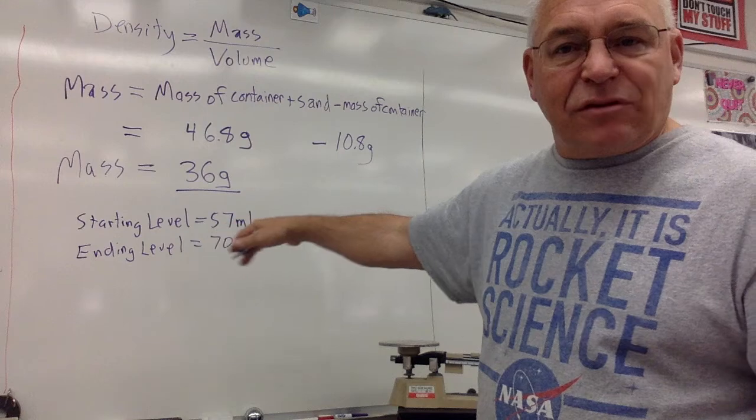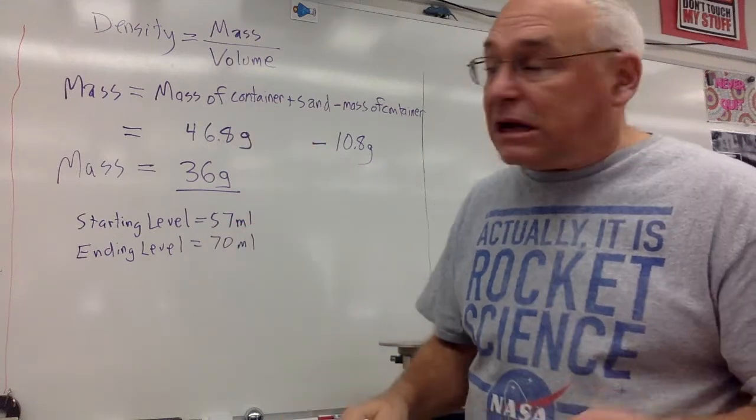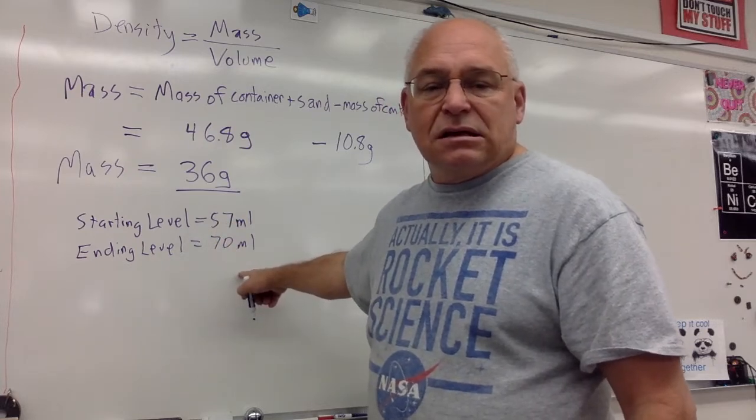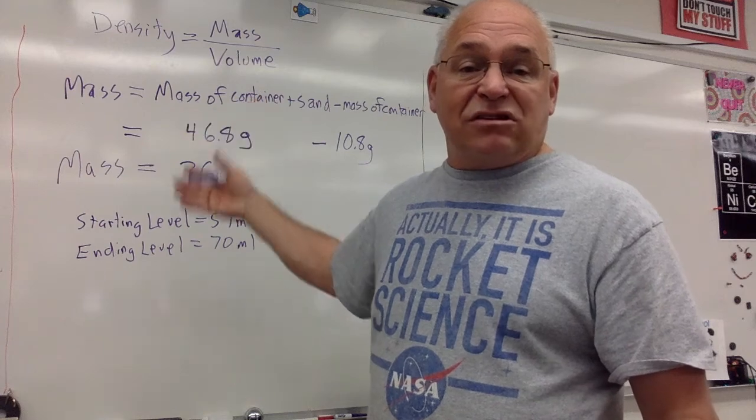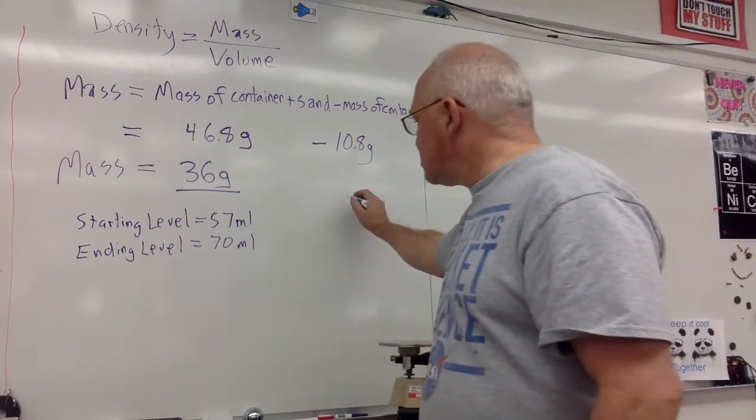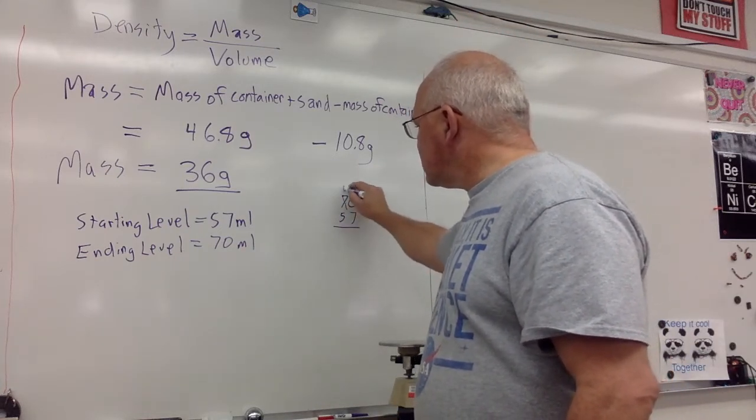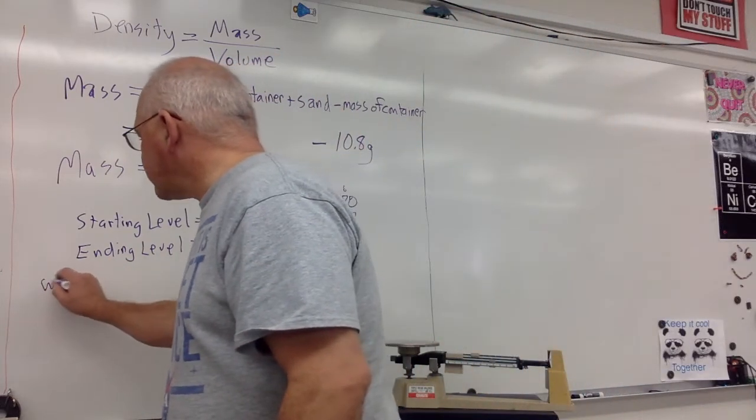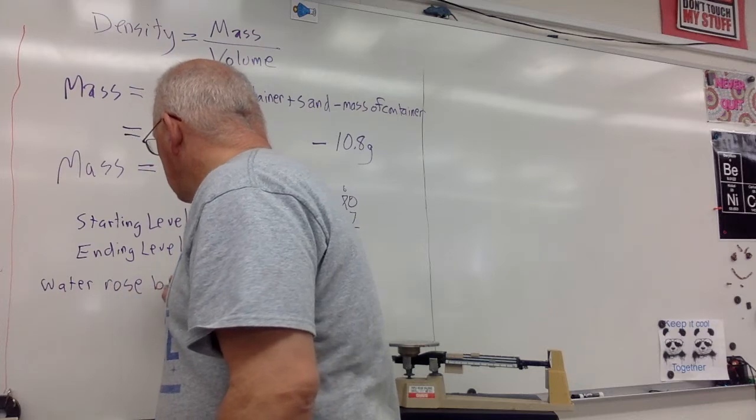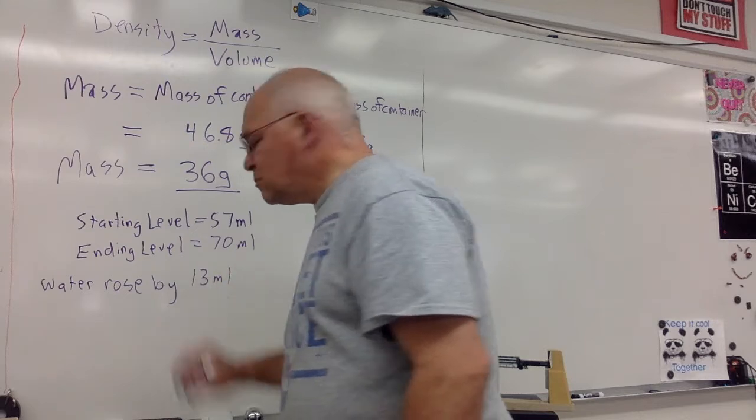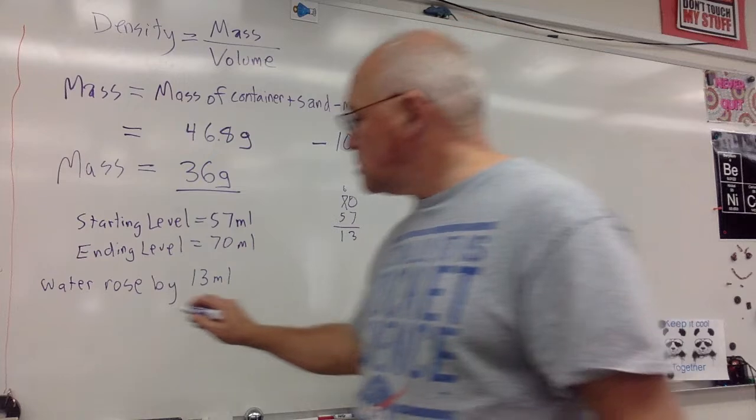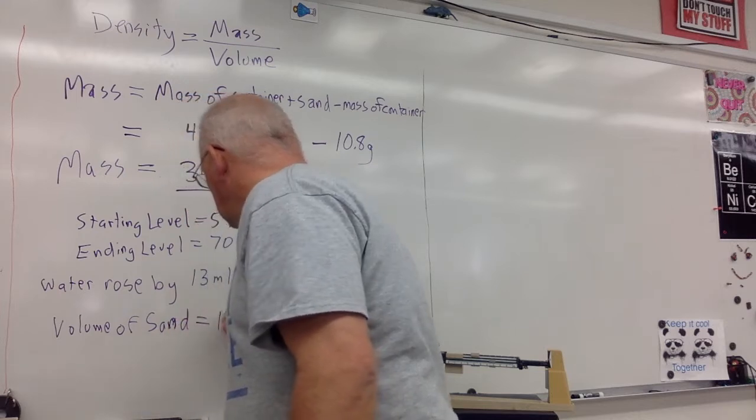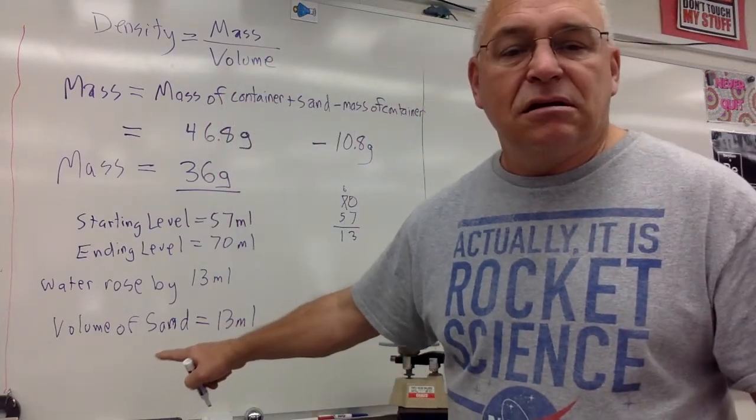When you're doing these problems, please write down all this information. That way, I can give you credit. Even if you get a wrong answer in the end, I can give you some partial credit for doing it the right way. So the question is, how much did the water rise to go from 57 up to 70? Well, it's 3 to get up to 60 and another 10 to get up to 70. So 13 from 70 to 57. If you want to do the subtraction, you can do it this way. So water rose by 13 milliliters.